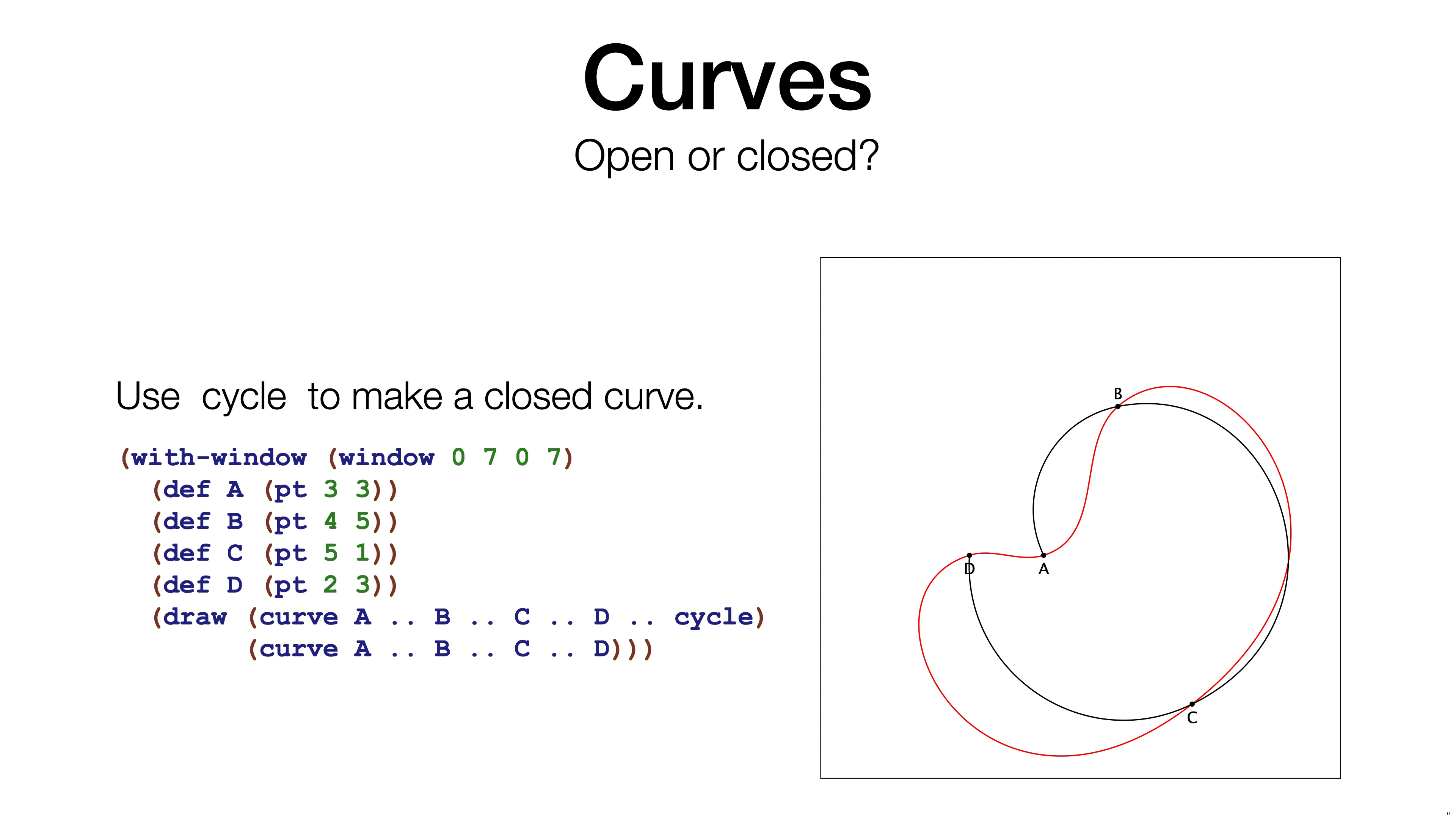So far, we have only drawn open curves. If you need the curve to form a closed loop, you can end the path specification with the keyword cycle.